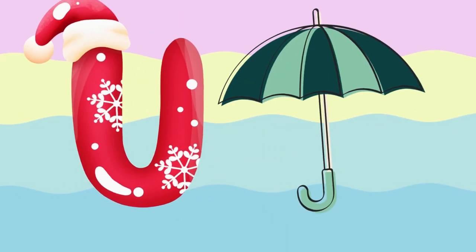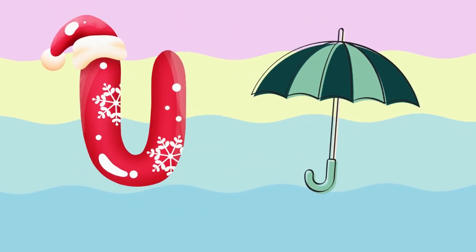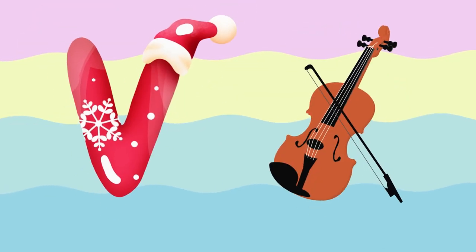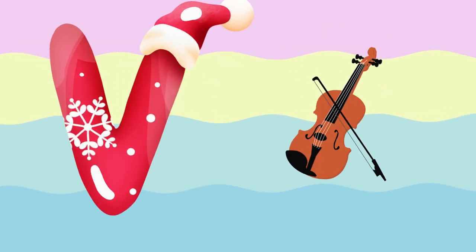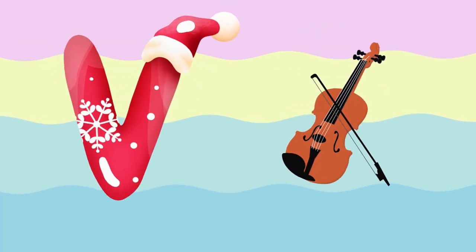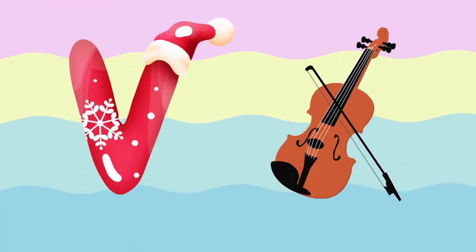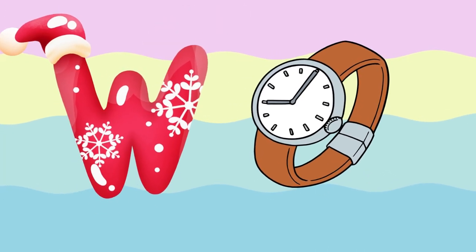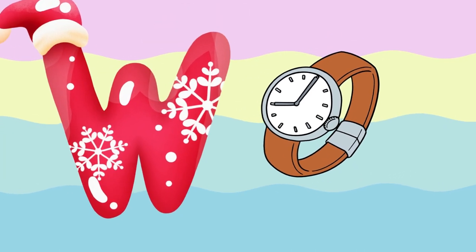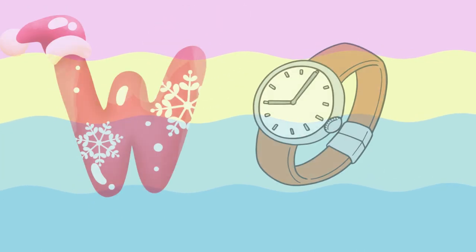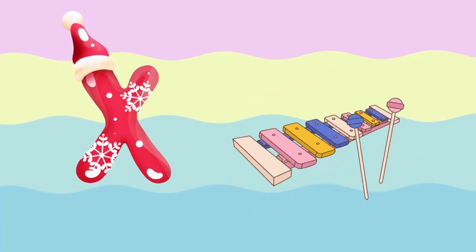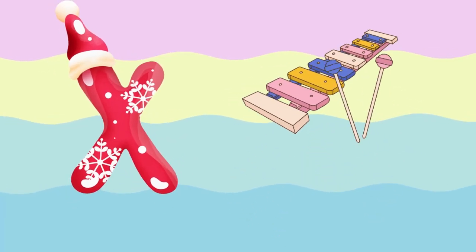U is for umbrella, u-u-u-umbrella. V is for violin, v-v-violin. W is for watch, w-w-watch. X is for xylophone, z-z-xylophone.